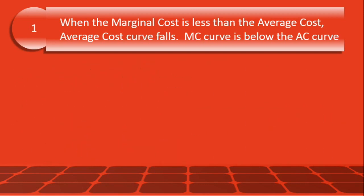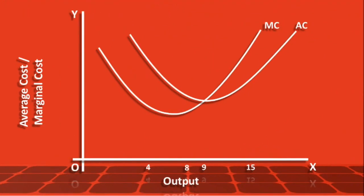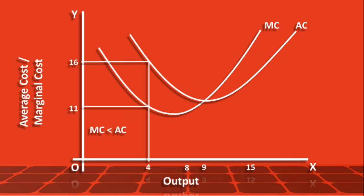We shall examine the first relation. When output is 4 units, average cost is 16 rupees and marginal cost is 11 rupees. Since marginal cost is less than the average cost, the average cost curve is falling, and the marginal cost curve lies below the average cost curve.